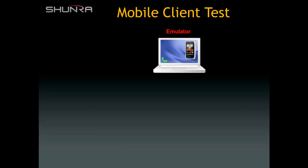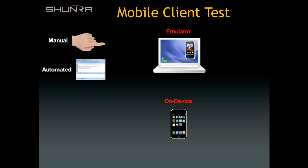When looking at the mobile testing process, there are two primary options for executing the tests. The first is to test using an emulator running on a test workstation — note that this also covers testing mobile web in a browser. The second option is to execute the tests on an actual mobile device, such as a smartphone or tablet. The advantage of on-device testing is that it verifies the real user experience on the actual device. Whether testing using an emulator or on device, there are fundamentally only two ways tests can be executed: manual execution or using automation.